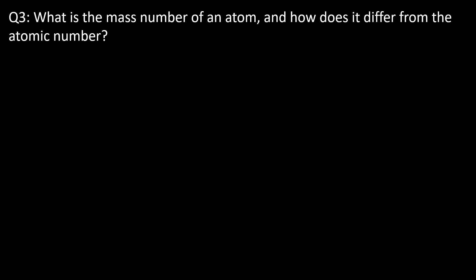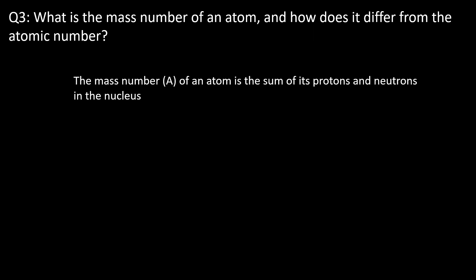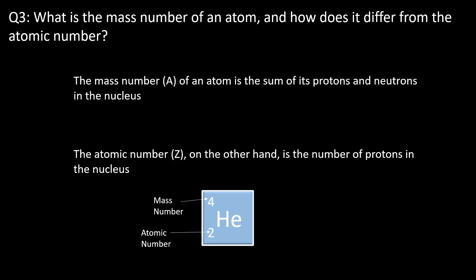Question three: what is the mass number of an atom and how does it differ from atomic number? The mass number of an atom is the sum of the protons and the neutrons in the nucleus and it's given by the letter A. While atomic number, on the other hand, is the number of protons in the nucleus — only the protons — and it's given by the letter Z. While the atomic number can uniquely identify an element, the mass number can vary for different isotopes of the same element due to changing numbers of neutrons.